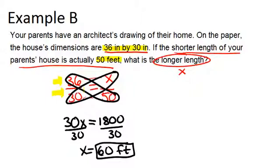You'd only need to convert the units if you were dealing with 36 inches by 30 feet or something like that. If there were two different measurements within the same ratio.